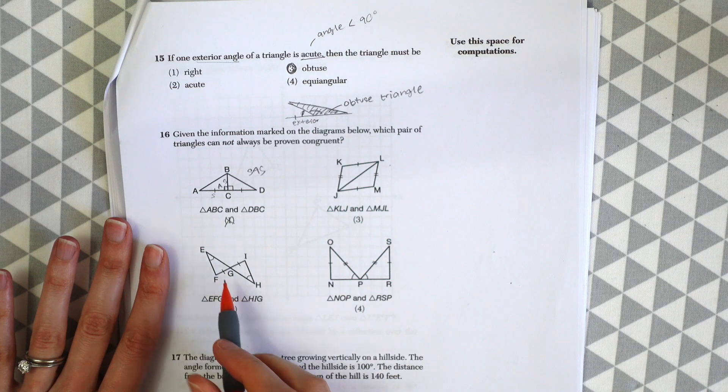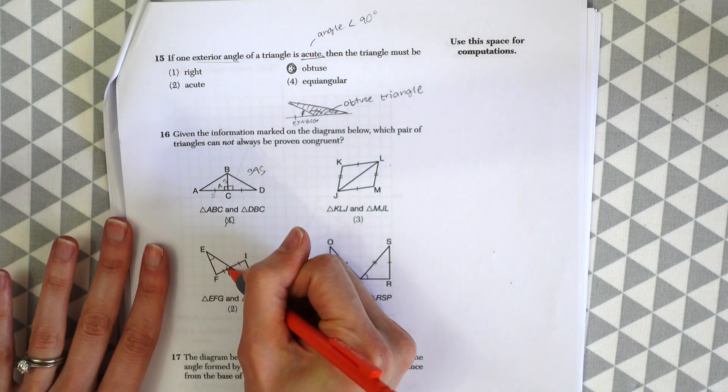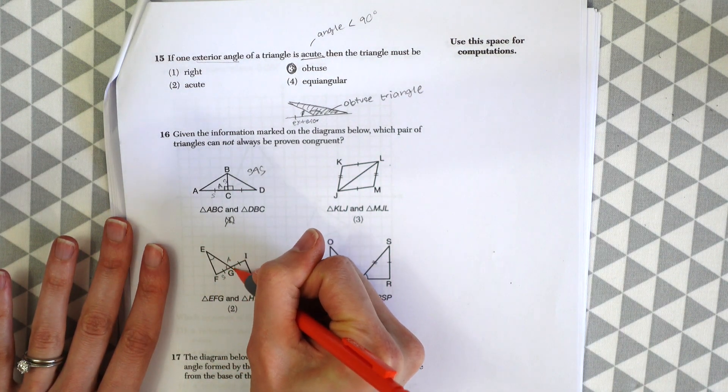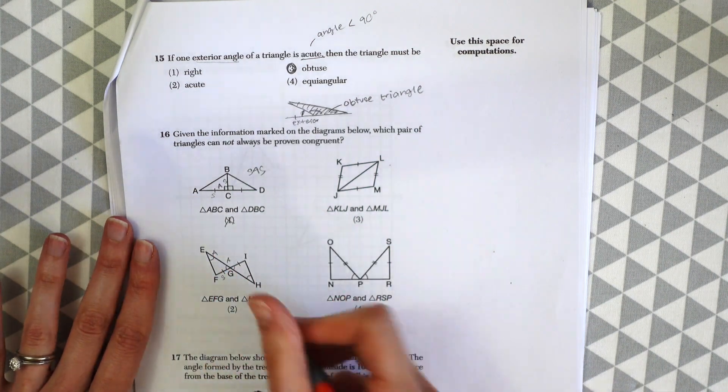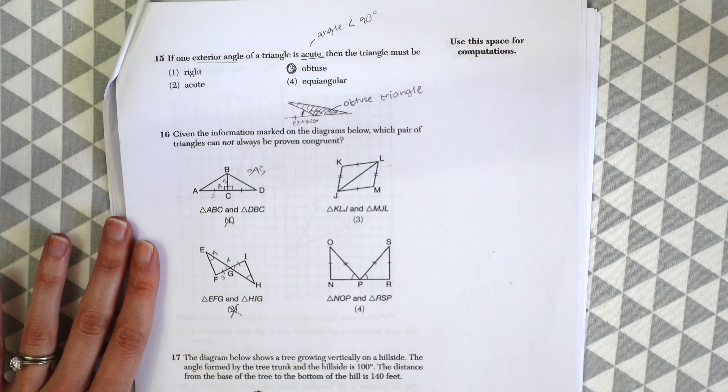We look at this example down here. We have a side, angle, and then another angle. That also works because it is angle, angle, side. So that's a real thing. So not going to be our answer.